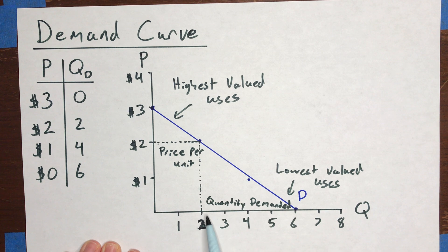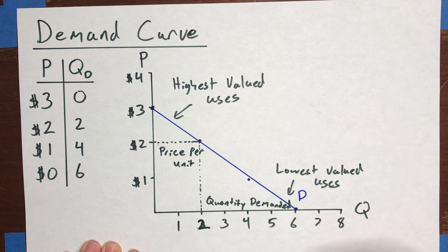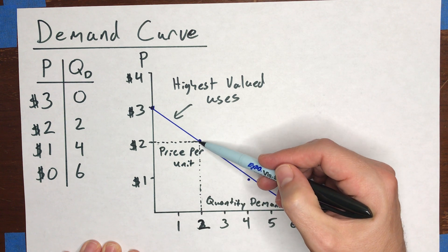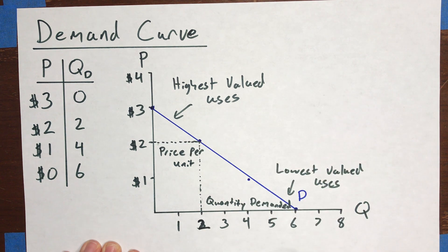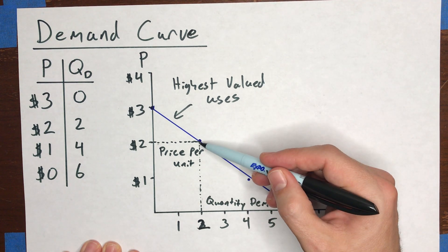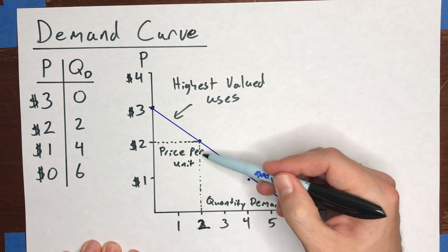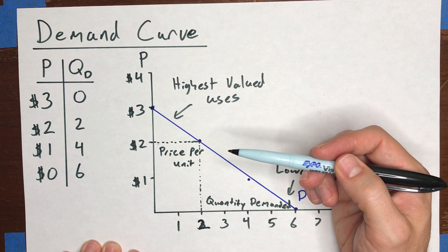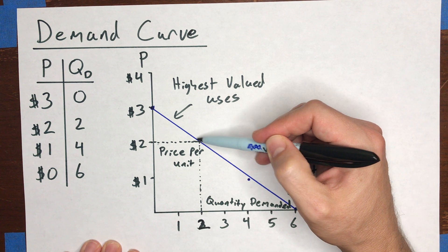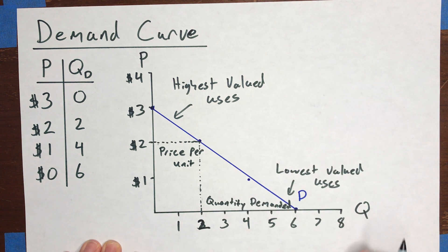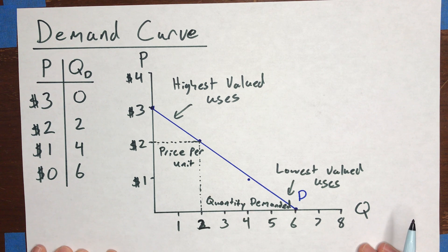The other way to read the demand curve is the reverse: take a given quantity, plug it into the demand curve, and figure out what price consumers would pay if you were selling that many units. For instance, if you have two units to sell, the demand curve tells you the highest price you could charge so consumers are still willing to buy both — which is two dollars per unit. You could sell those two units at a lower price, but there's no point if you're a seller. Charge any amount above two dollars and you won't be able to sell both units.